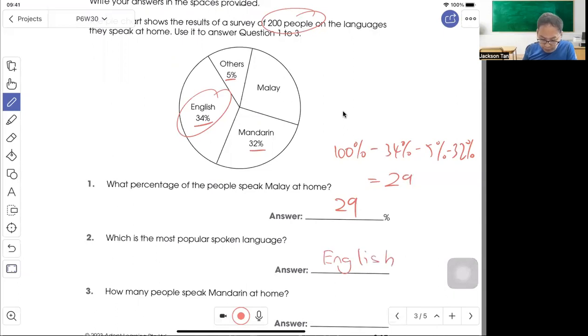Then how many people speak Mandarin? So Mandarin we know is 32. So total there are 200. So 32 out of 100 and 200, there is 64. Answer is 64.